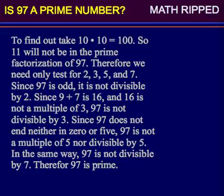Is 97 a prime number? To find out, take 10 times 10 equals 100. So 11 will not be in the prime factorization of 97.